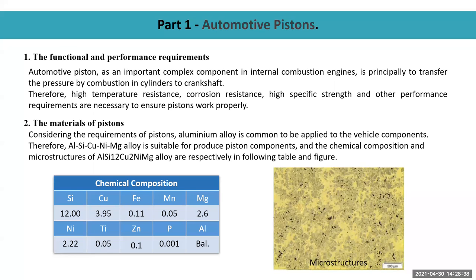In the first part, I will describe the details of automotive pistons. Automotive pistons play a role as an important complex component in vehicle engines. Their function is to transfer the pressure from combustion to the crankshaft. Therefore, high temperature resistance and other performance requirements are necessary to ensure pistons work properly. The most common material is aluminum alloy, and the chemical composition and the microstructure of such material in the state of non-dendrites are illustrated in the following table and figure.